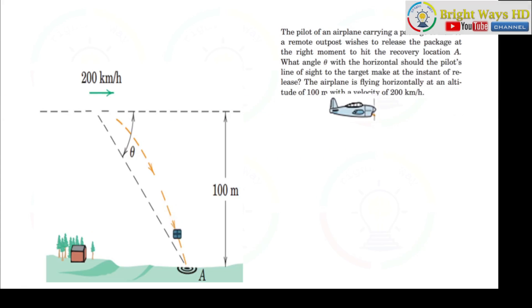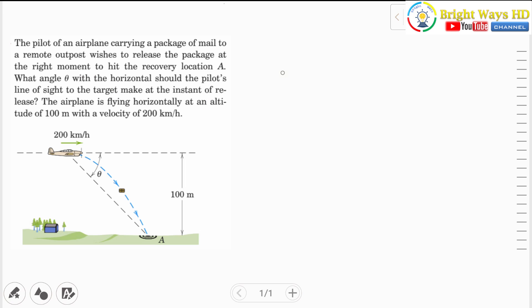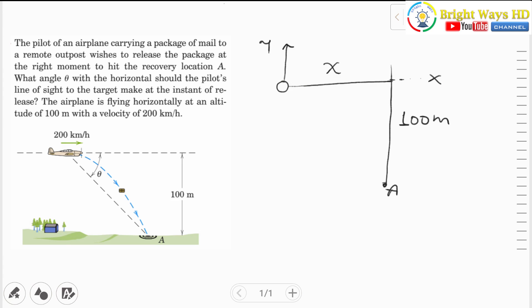The horizontal distance from the airplane to the target must be known to get the line of sight angle theta. To do this, we construct the problem as a particle. The horizontal distance from this point to the target is x, and the vertical distance is given as 100 meters. The line of sight angle theta is measured from the x-axis to the line of sight to the target.